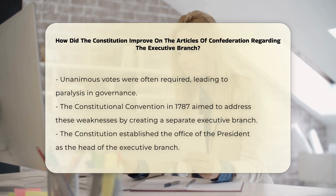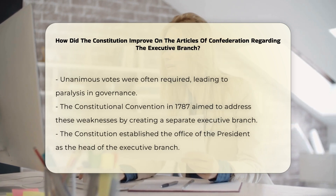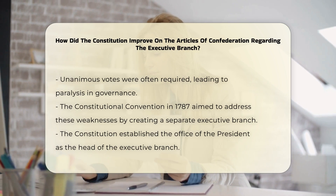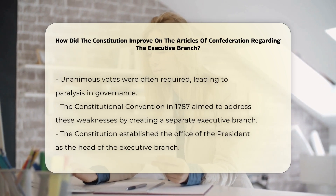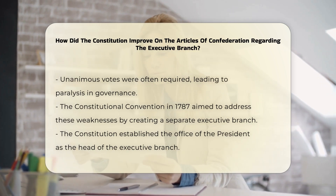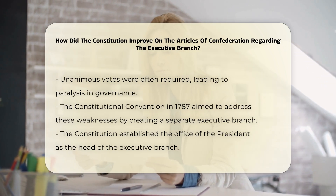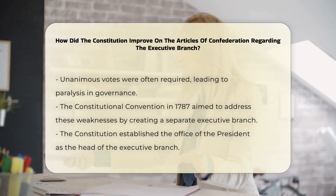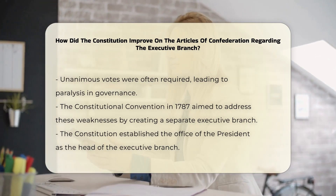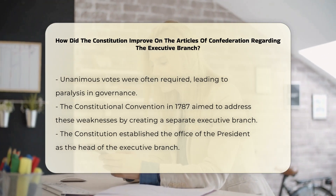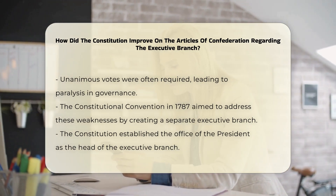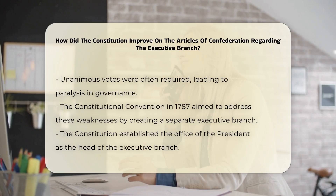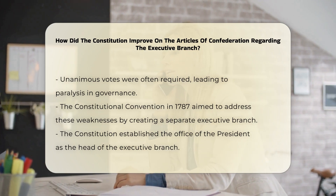The Constitutional Convention in 1787 addressed these shortcomings by creating a separate Executive Branch. This branch was designed to have the power to enforce federal laws and conduct foreign policy — crucial functions that the Articles of Confederation could not handle.